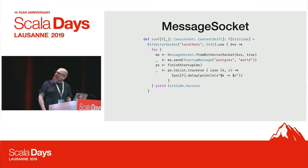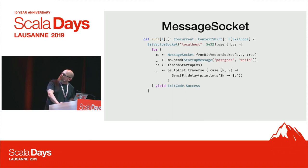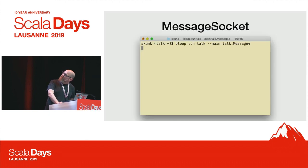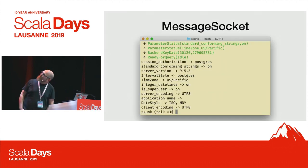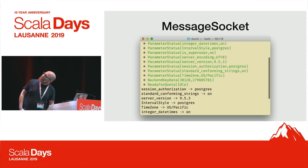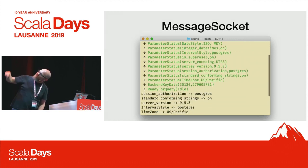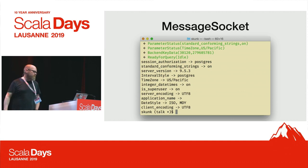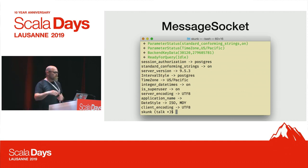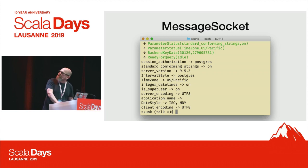Here's the new program using real Skunk types: we make a BitVectorSocket, from that we make a MessageSocket, send the startup message directly, call our finishStartup routine which returns all those parameters, then traverse the list and print them out. When we run that — with an instrumented version of the code showing messages going back and forth — we get the result. We're very close to being able to do something useful. Let's try to run a query.